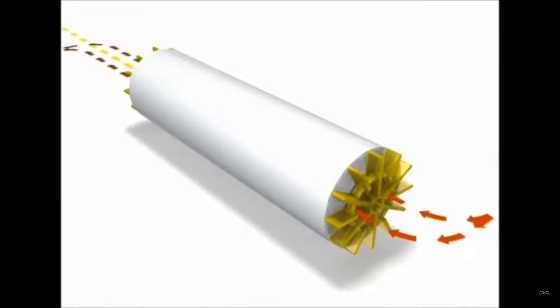Feed enters at one circular end of the spiral membrane and travels down the membrane, illustrated by the red arrows. Permeate, illustrated by the yellow arrows, and retentate, illustrated by the dark red arrows, leave at the other end of the spiral membrane.